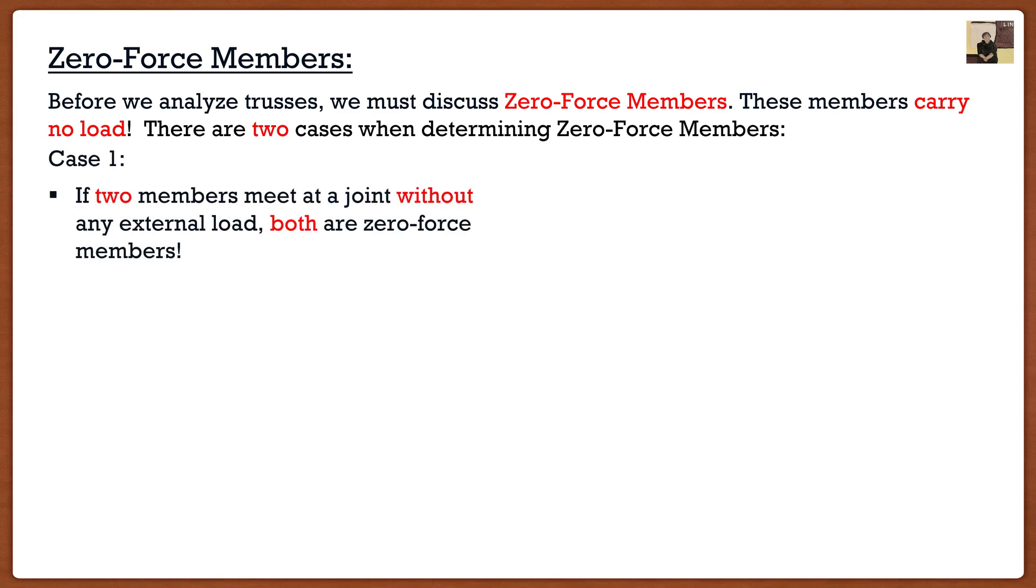The first one is if two members meet at a joint without any external load. If this is the case, both of those members that meet at the joint are zero-force, they carry no load. So if this was my case here with my joint which is the purple dot and my two forces from the members, I can automatically conclude without any calculations that both of these are zero force, meaning that both F1 and F2 are equal to zero.